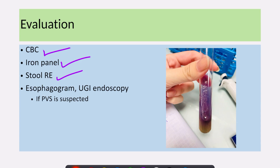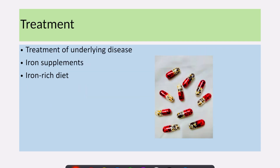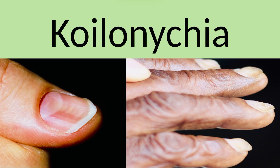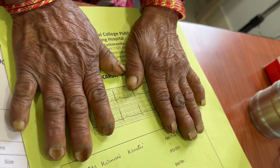If you are suspecting anemia, we can do a CBC, iron panel, and stool routine examination. In some cases, like if you are suspecting Plummer-Vinson syndrome, you can go for a barium swallow or upper endoscopy. Treatment is basically the treatment of the underlying disease. Iron supplements are required for patients with iron deficiency, and an iron-rich diet can be advised. Similarly, skin disorders need to be treated. Now we'll watch a video of a patient with koilonychia.